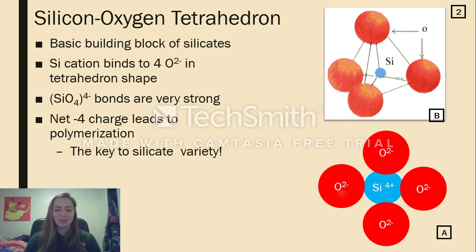Each silicon cation will take one of the two electrons present on each oxygen that it's bound to, leaving the silicon oxygen tetrahedron with an overall charge of negative 4. This negative 4 charge is what allows other cations like iron or calcium or magnesium to bind to the tetrahedron.